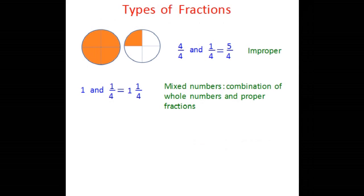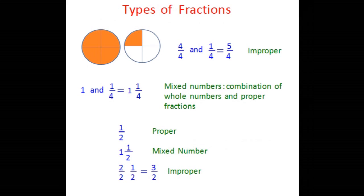Let's look at some more examples. If I have a banana and eat half of it, I write it as 1 over 2, which is a proper fraction. But if I am more hungry and eat one and a half bananas, I can represent it as 1 and a half — a mixed number. I can also write the same thing as 2 over 2 plus 1 over 2, which adds up to 3 over 2 — an improper fraction.